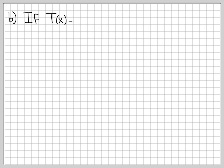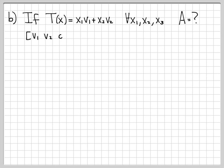Now let's do another example. What if T(x) is defined slightly differently: T(x) = x1·v1 + x2·v2, with no x3 or v3 term. What would A be in this case? We can guess that A is the matrix whose first column is v1, second column is v2, and third column is the all-zero vector.